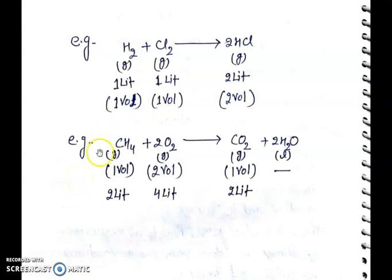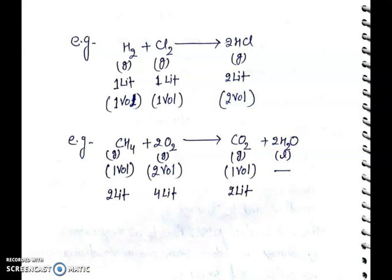In the second example, when one mole of methane gas reacts with 2 moles of oxygen gas to give 1 mole of carbon dioxide gas, we can say that one volume of methane reacts with 2 volumes of oxygen to give 1 volume of carbon dioxide. We cannot consider the water because water is liquid in state. According to the law of combining volume, if we use 2 liters of methane gas, then we need 4 liters of oxygen gas, which gives 2 liters of carbon dioxide gas. Thank you.